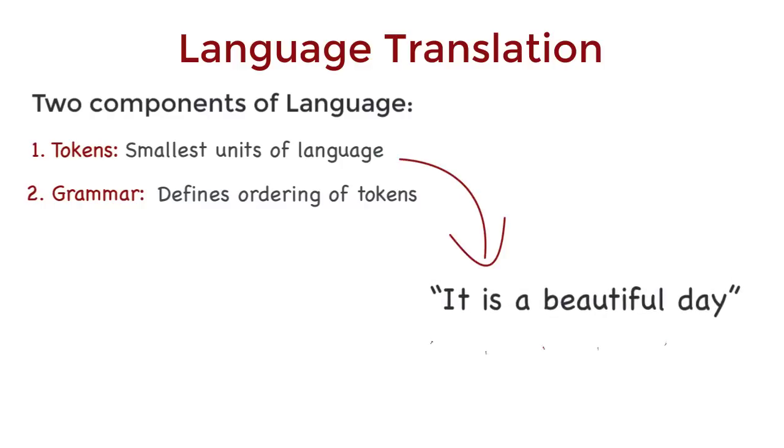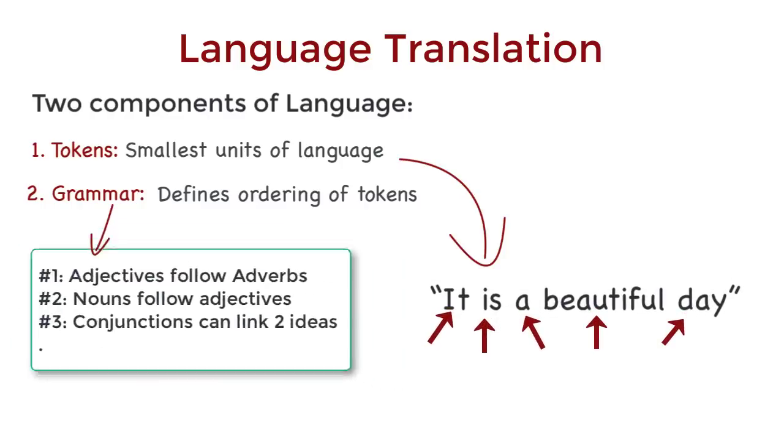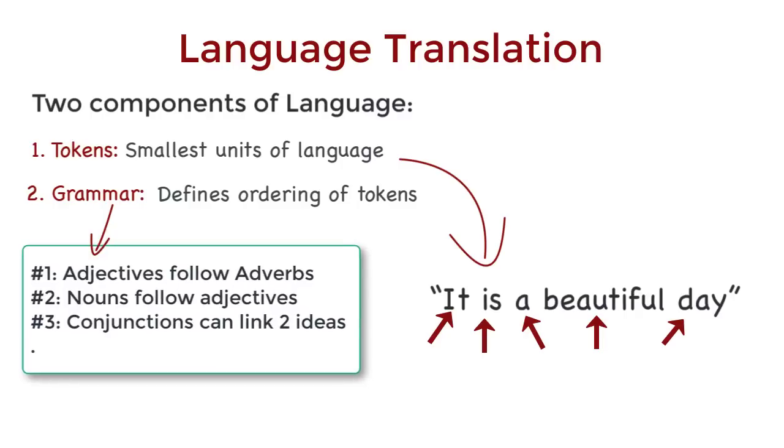It's a beautiful day has five word tokens. And grammar is basically a guide or a set of rules that defines an ordering for these words.